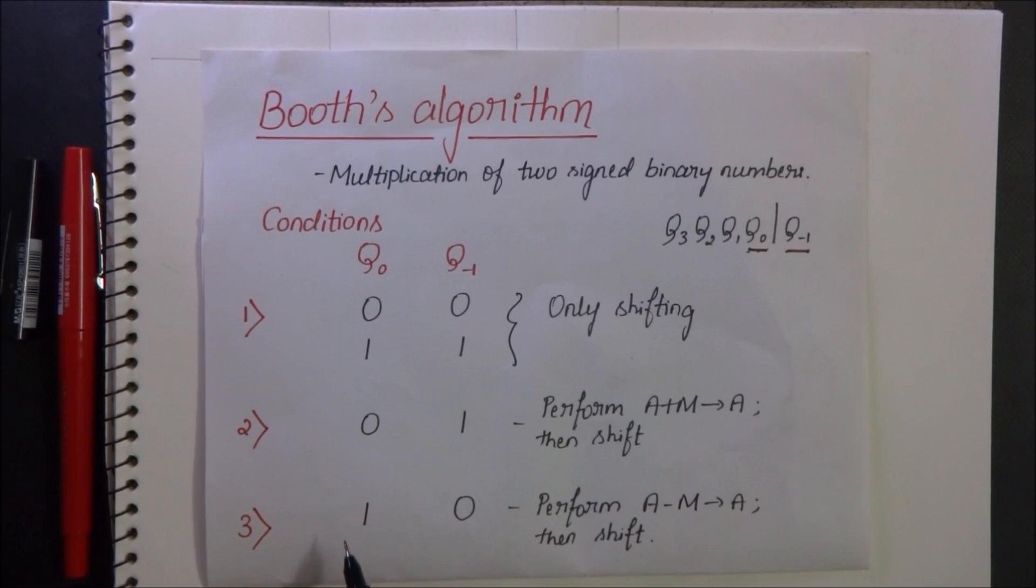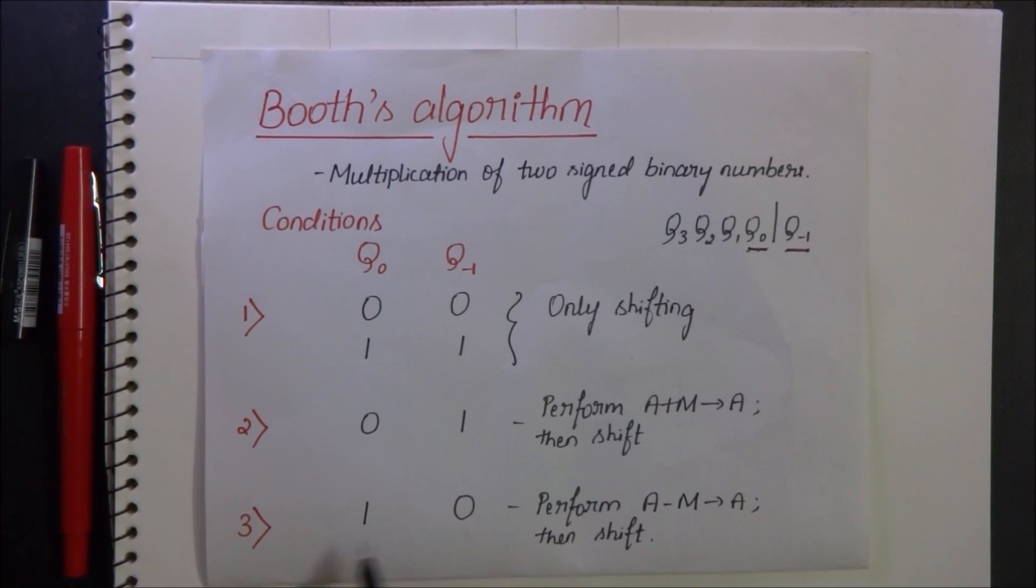In the third case, Q0 is 1 and Q-1 is 0. In such a case, we perform A minus M, store the result in A and then shift.